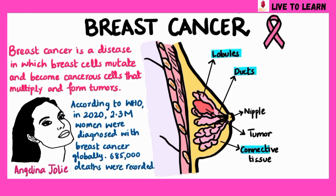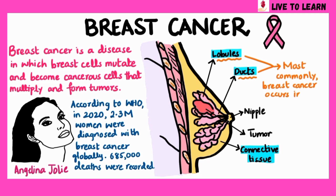The breast tissue is made up of many different types of cells, including lobular cells, ductal cells and connective tissue cells. Breast cancer most commonly occurs in ductal or lobular cells.